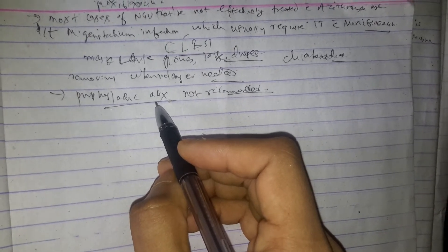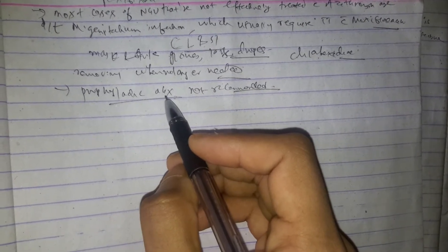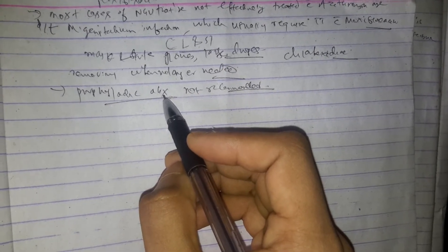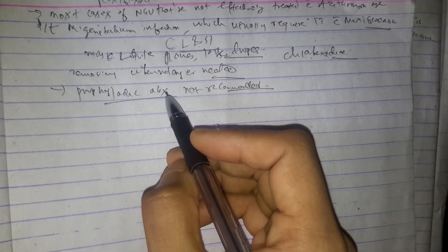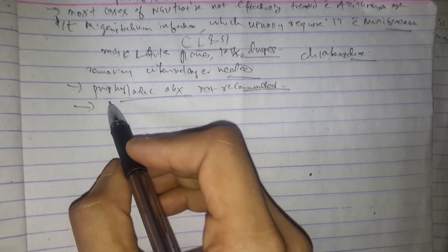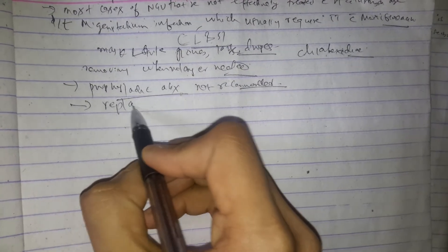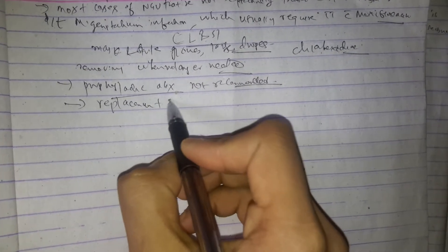Vancomycin resistant enterococcus outweighs the benefits. And the replacement of a catheter using guide wire results in increased risk of bloodstream infections. In addition, routine replacement of catheter is not associated with decreased risk of bloodstream infections. So let's write it down.